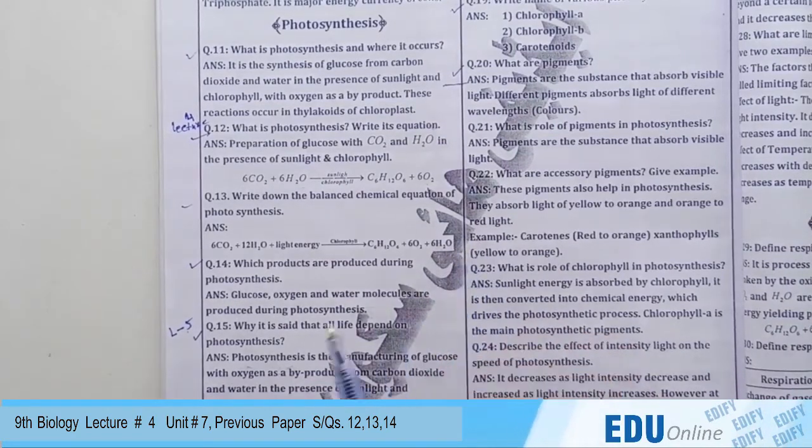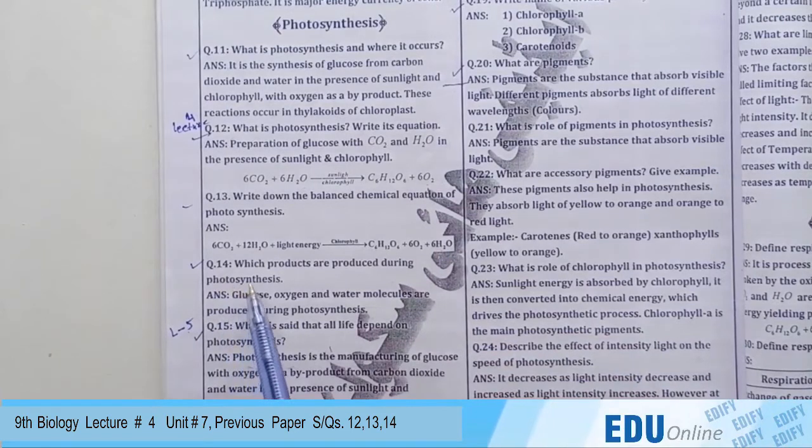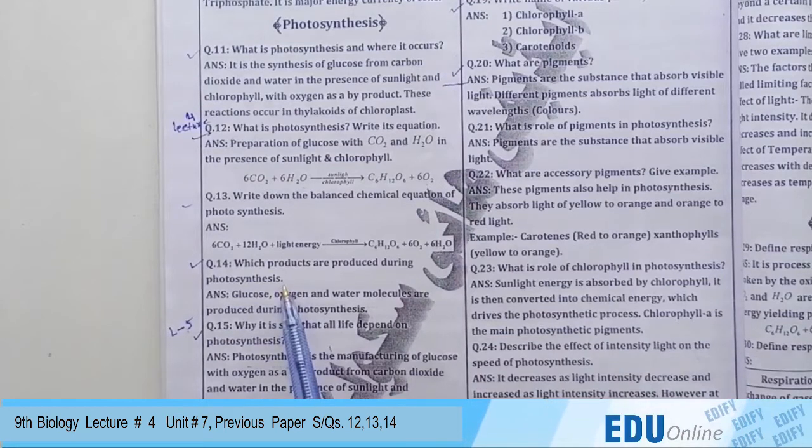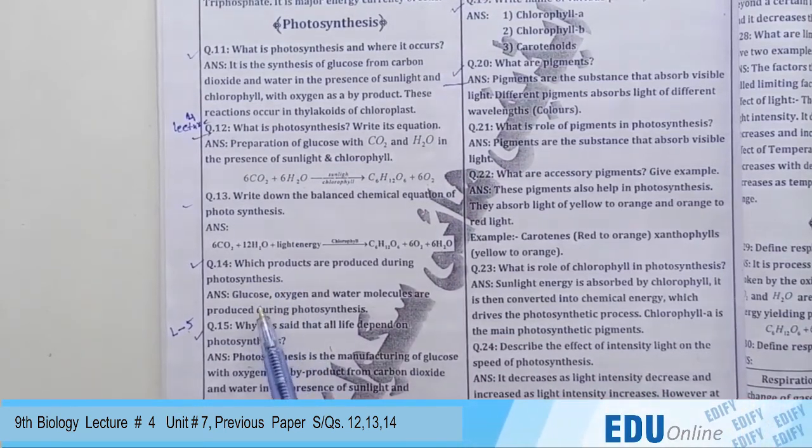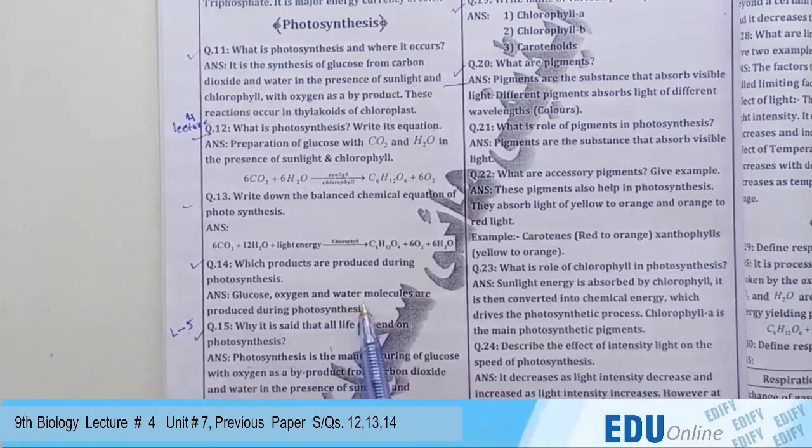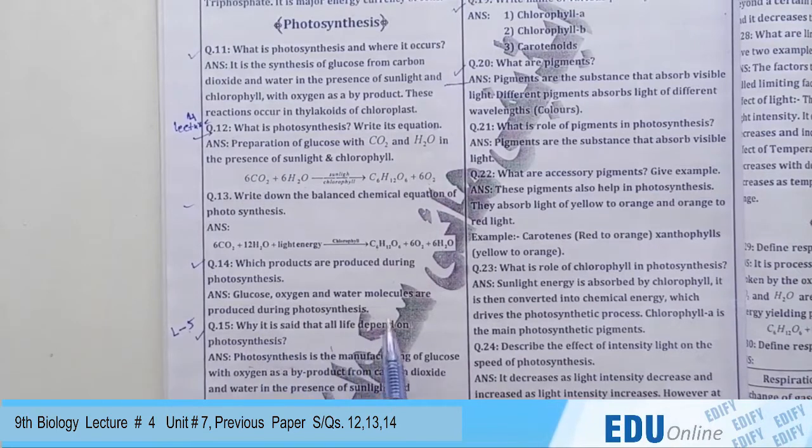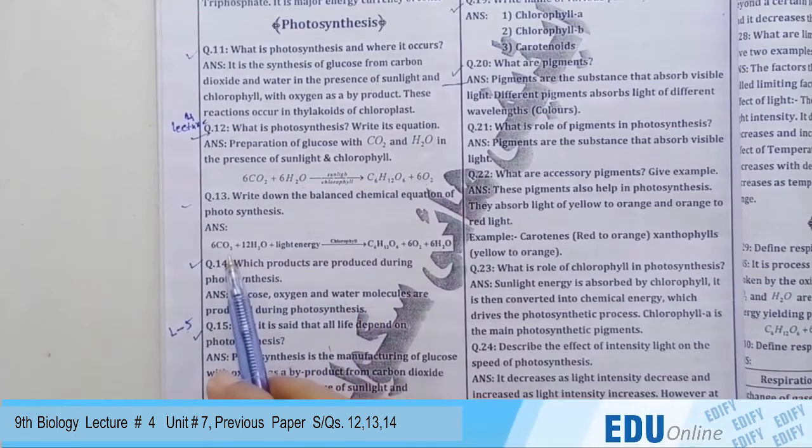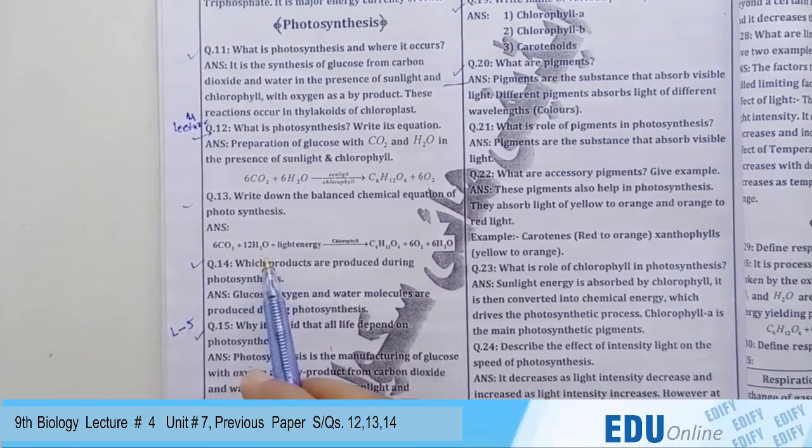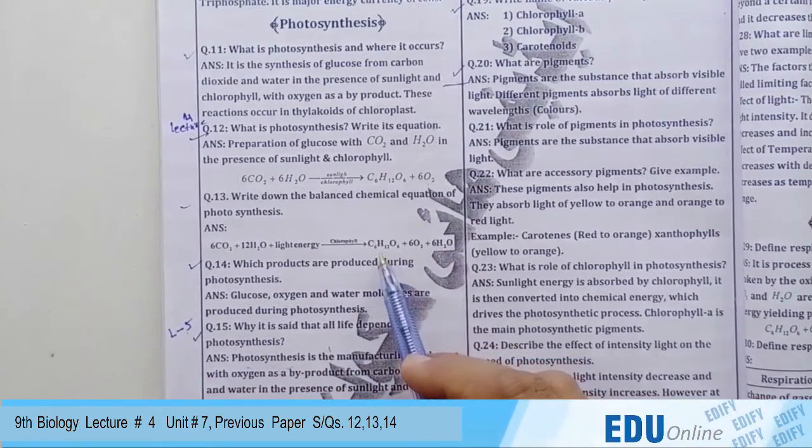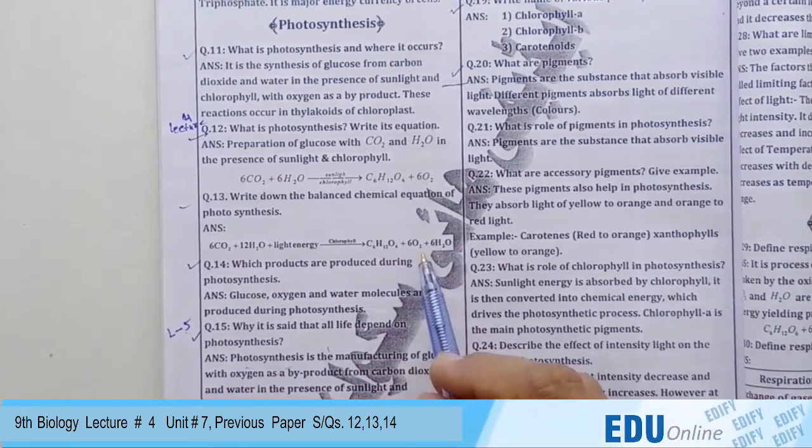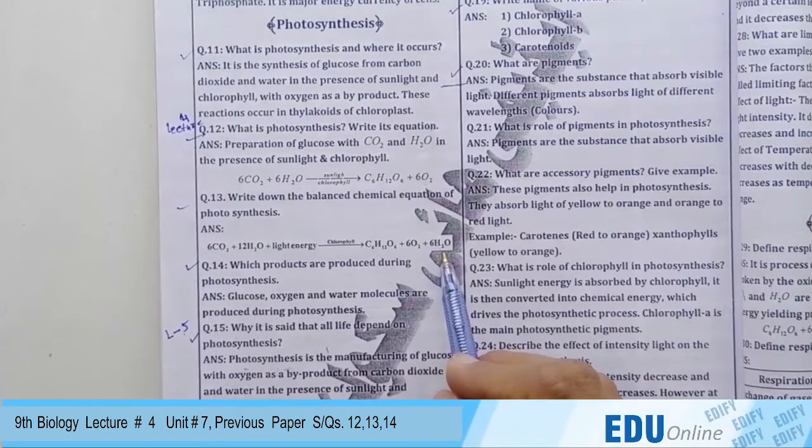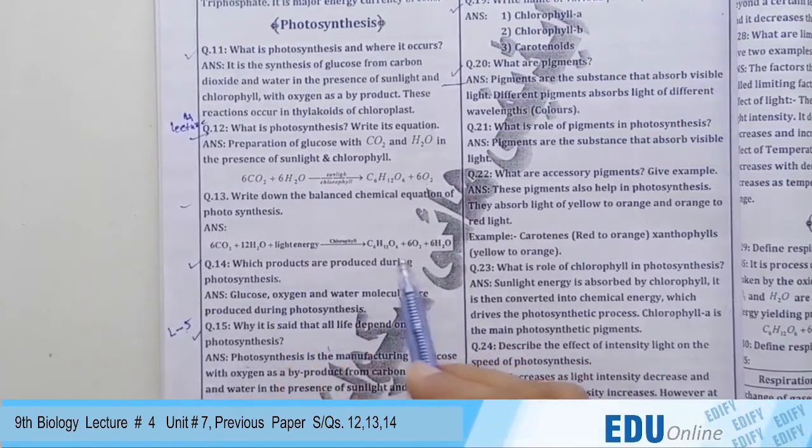Question number 14: which products are produced during photosynthesis? Answer: glucose, oxygen, and water molecules are produced during photosynthesis. As you saw in the first equation, the reactants are carbon dioxide and water, and the products formed are glucose C6H12O6, water, and oxygen.